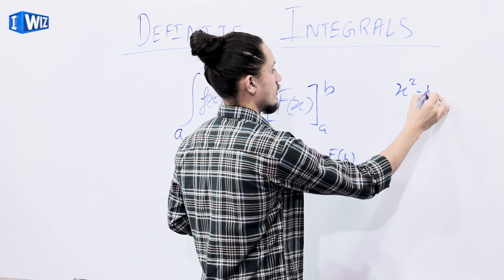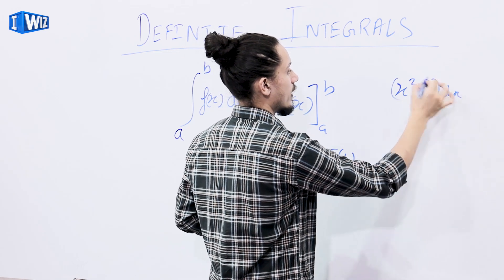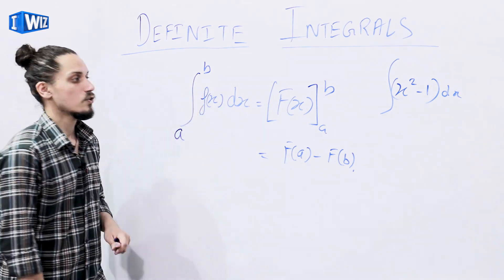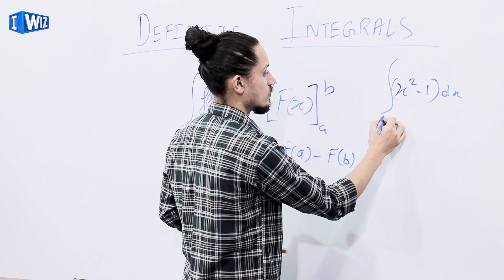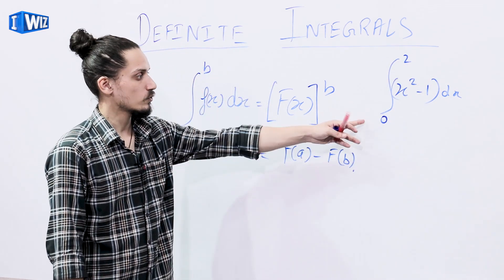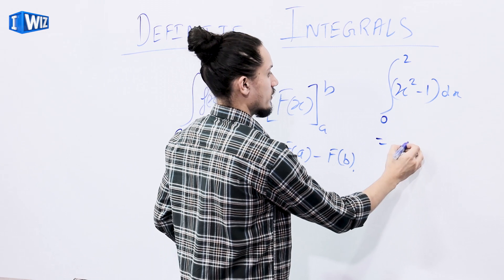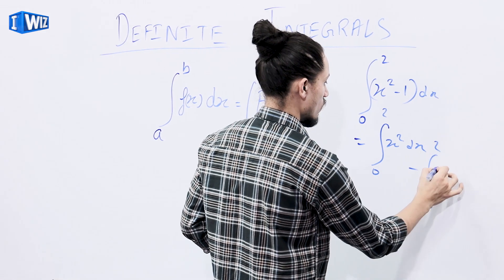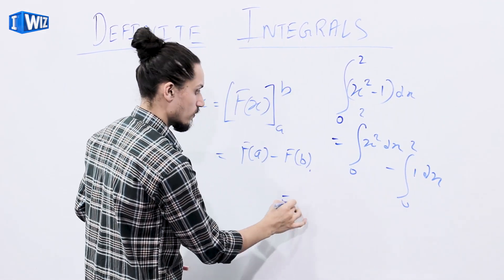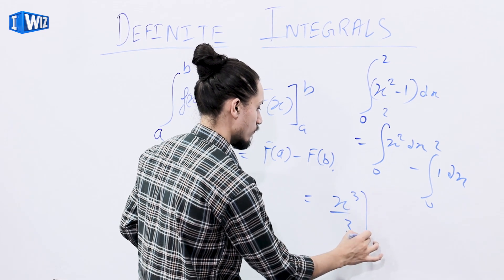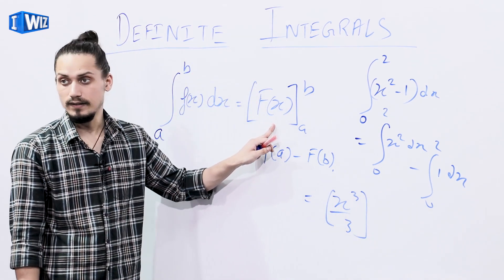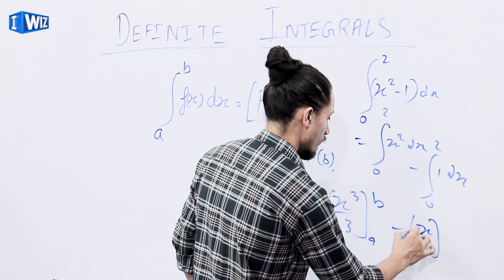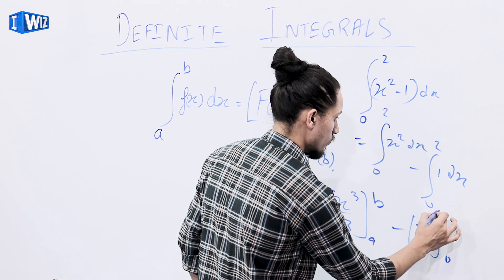Say we have the example of integrating x squared minus 1 dx within the limits 0 and 2. So this integration splits into: integral from 0 to 2 of x squared dx, minus integral from 0 to 2 of 1 dx, which equals x cubed by 3 evaluated from 0 to 2, minus x evaluated from 0 to 2.